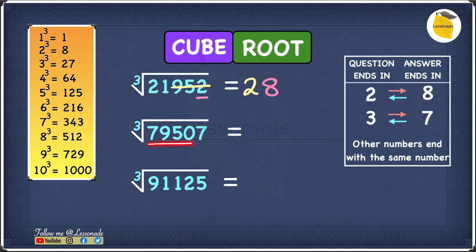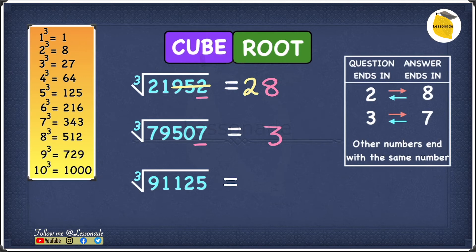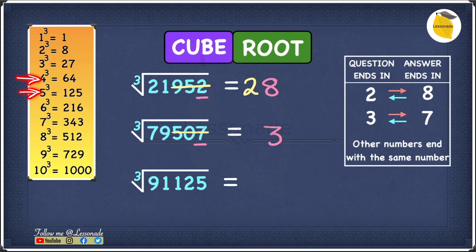Let's move to the next one: cube root of 79507. The last digit is 7, and because the question ends in 7, our answer will end in 3. Cross out the last three digits — 5, 0, 7 — and we're left with 79. The 79 fits between 64 and 125, so between 4 cubed and 5 cubed. Since 4 cubed is smaller, our answer starts with 4. So our answer is 43.